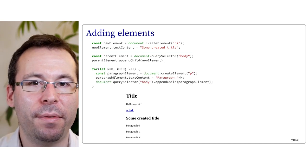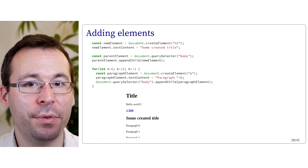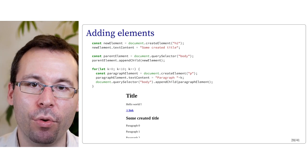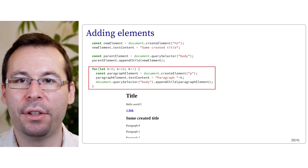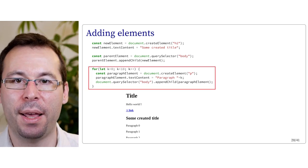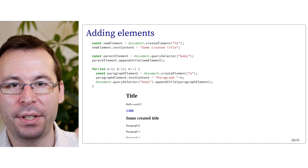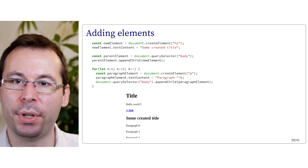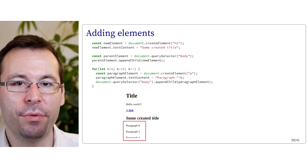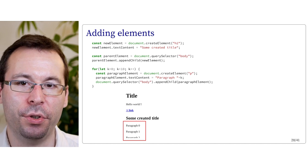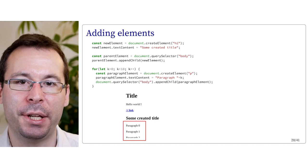Here is a version where we create a bunch of new elements in a loop. In each iteration, we create a new paragraph element and add it to the body. The result is a lot of new paragraphs added to the web page.